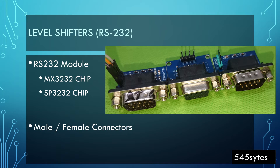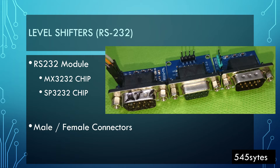I found out that there are two types of chips in these modules: one is MX3232 and the other is SP3232. MX3232 is cheaper and SP3232 is a so-called industrial-level chip. I tried using SP3232 thinking maybe my problems were due to MX3232, but there was no difference. MX3232, which is cheaper, is just fine.